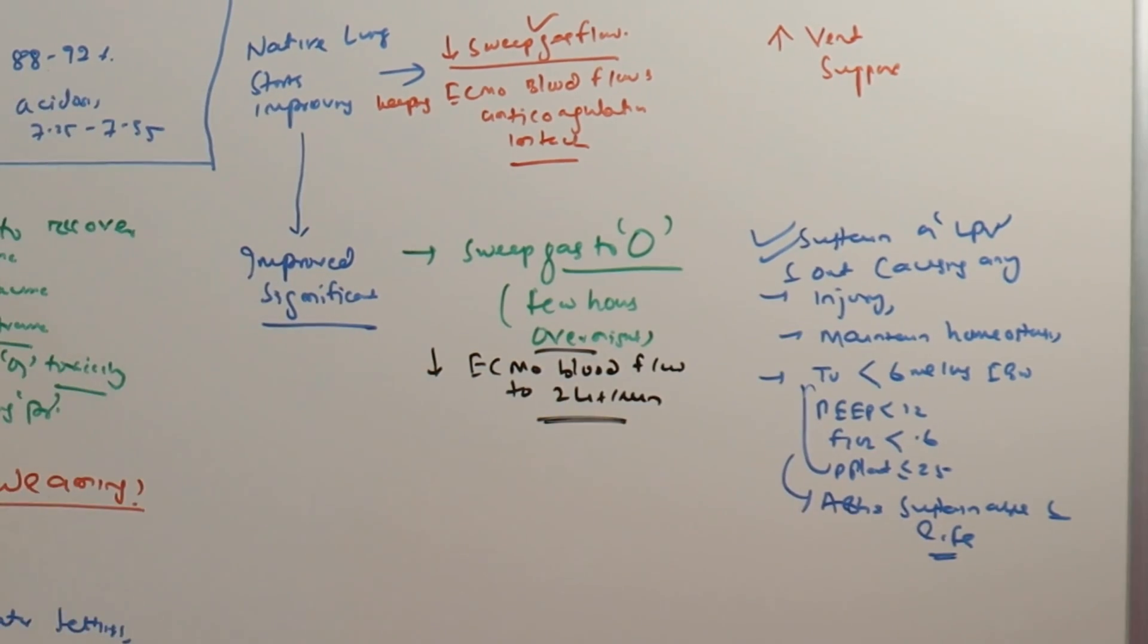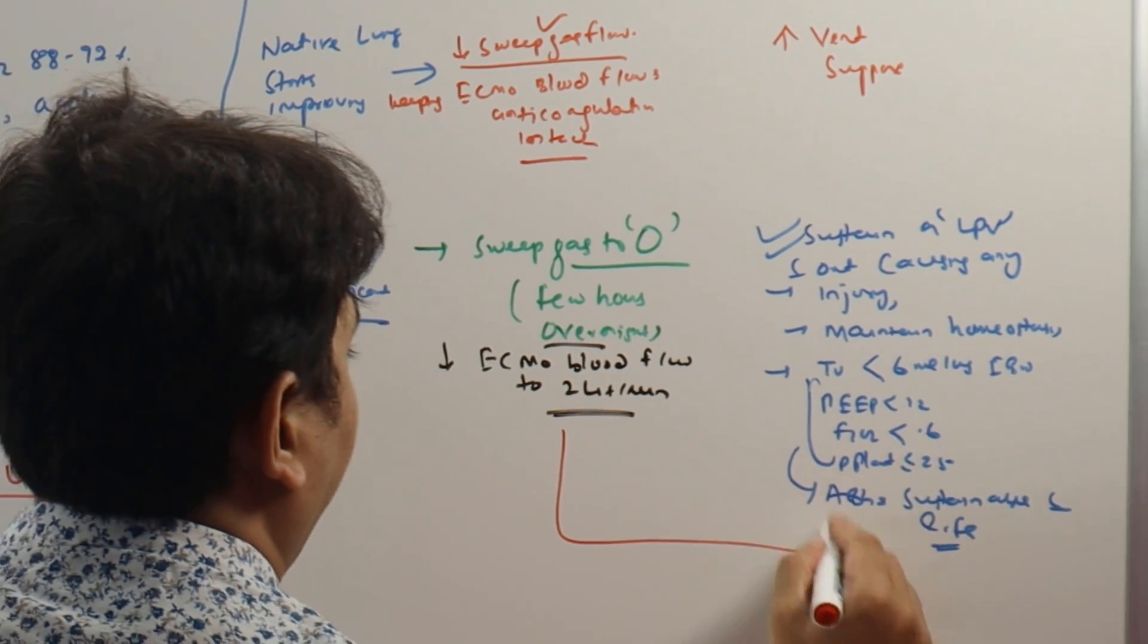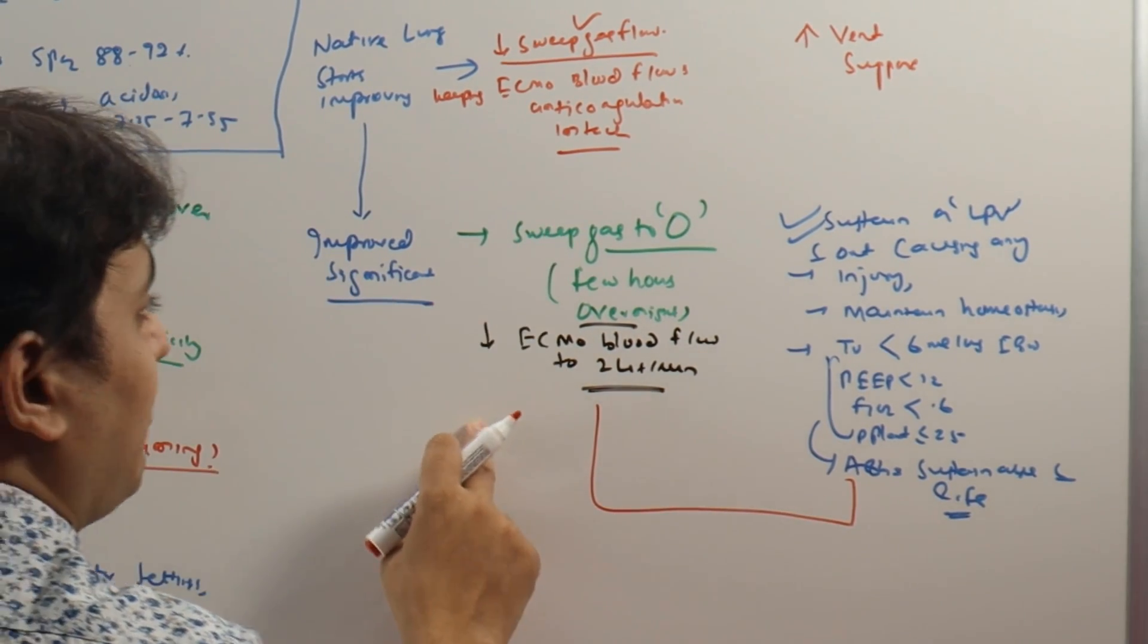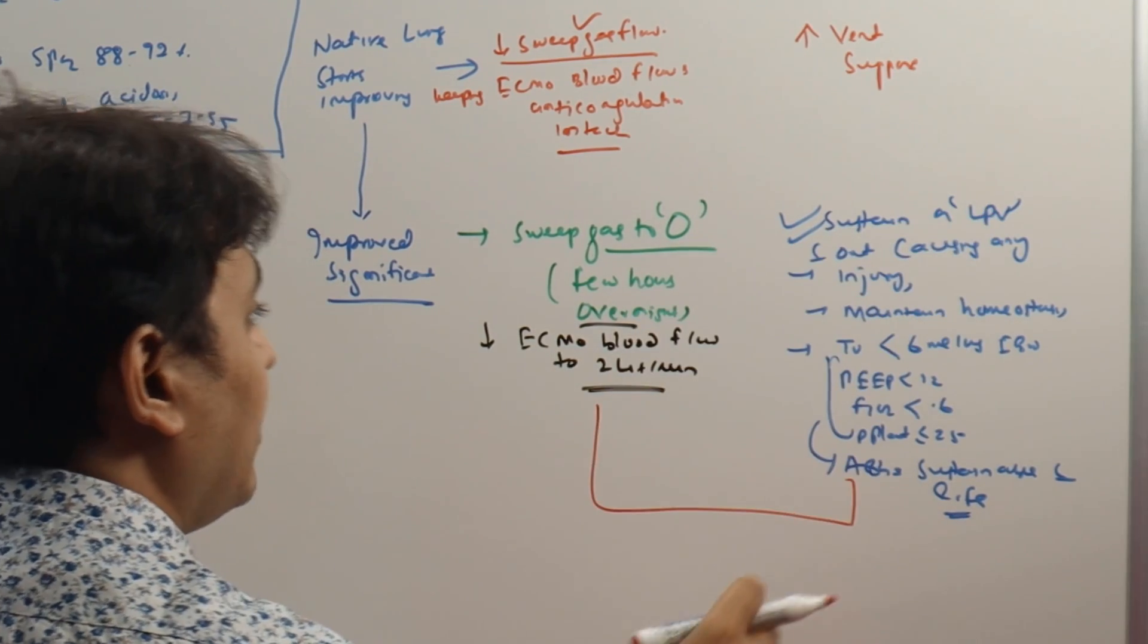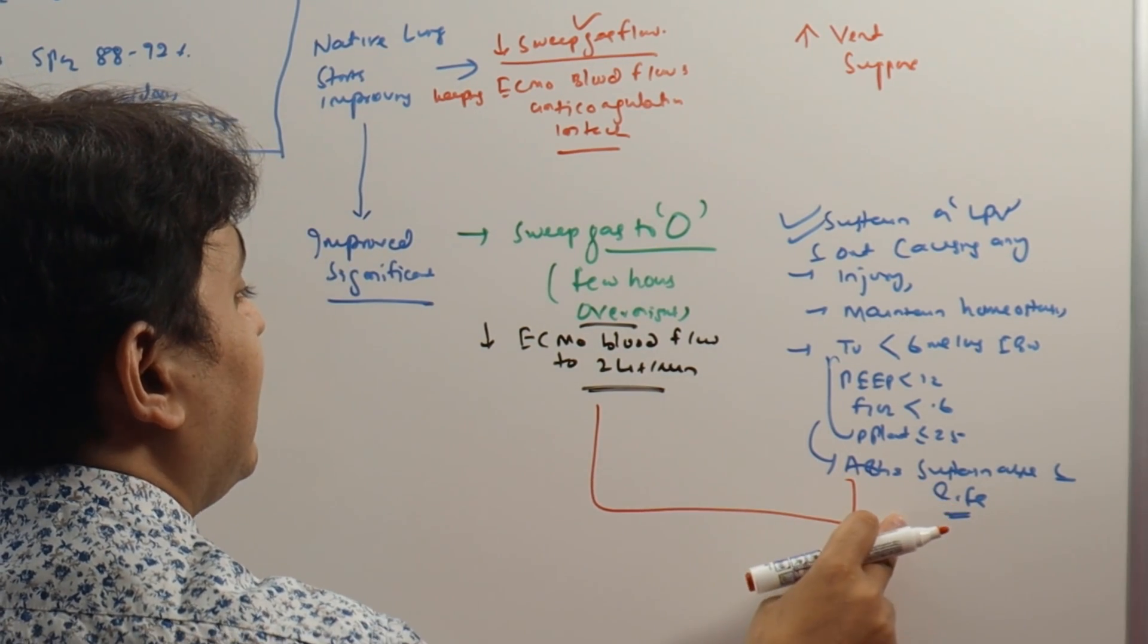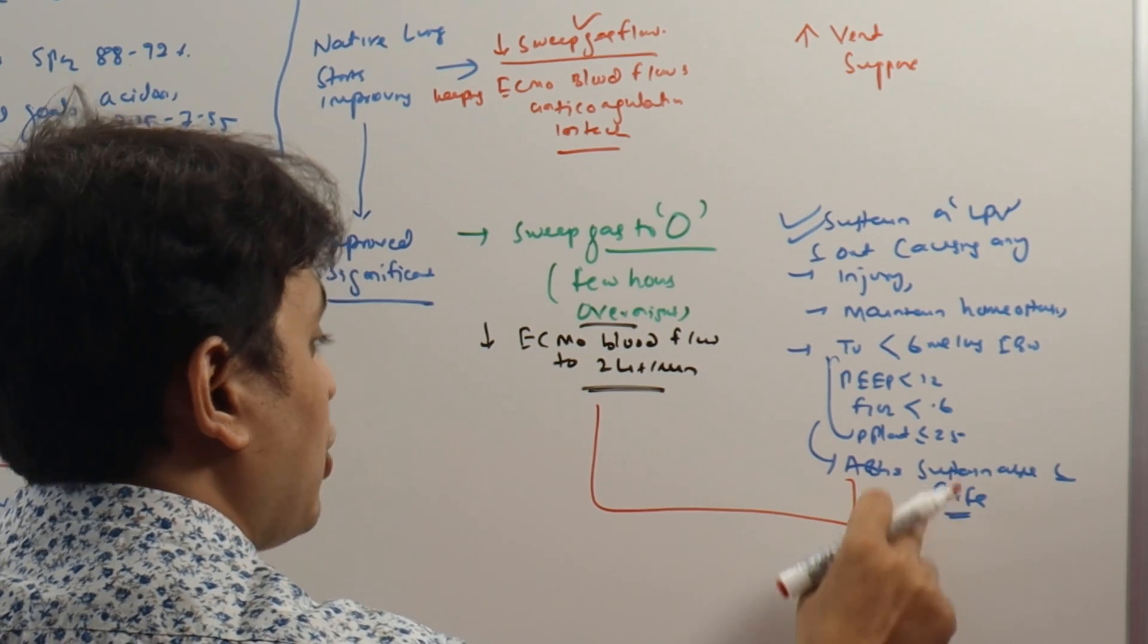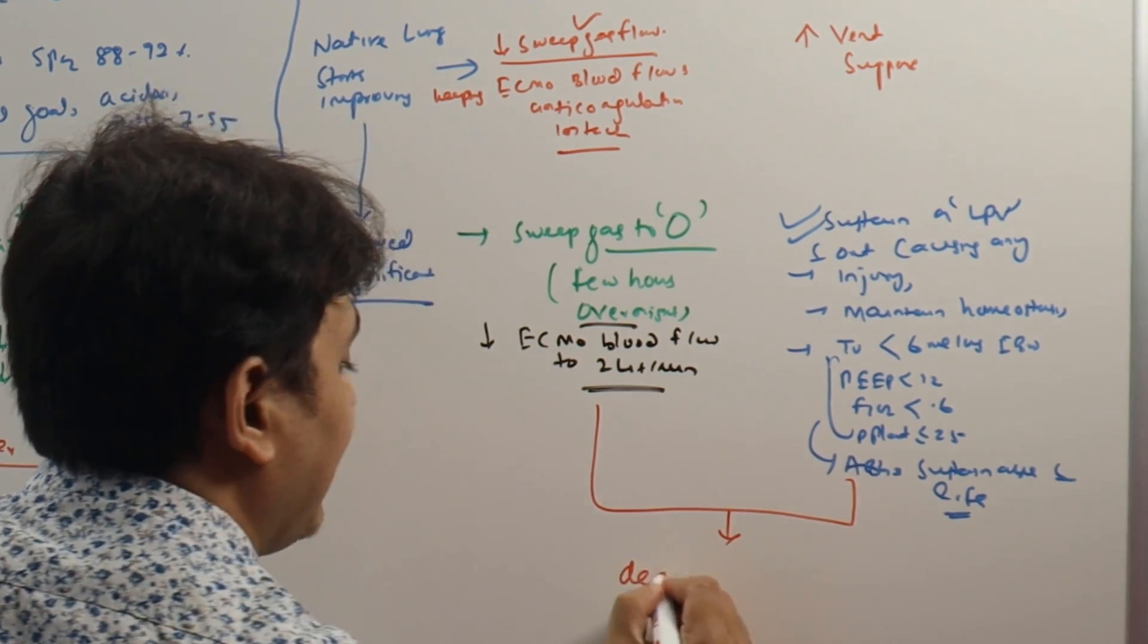If the patient passes this test - tolerates sweep gas flow zero with minimal ECMO blood flow and a lung protective ventilation enough to keep a P plat of less than 25 and an ABG that can sustain life, that means there is no problem in oxygenation, there is no problem in ventilation - if this happens, decannulation can be tried.